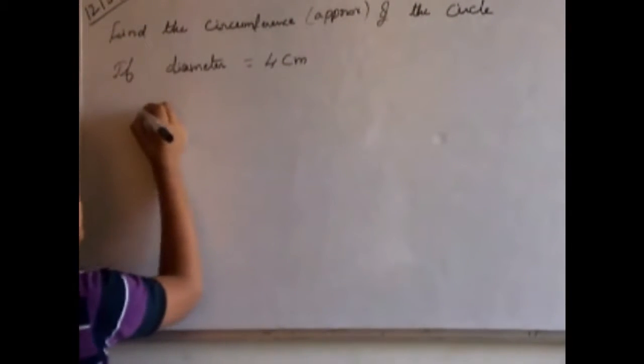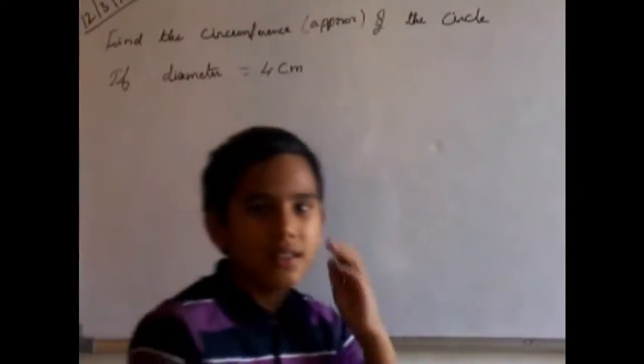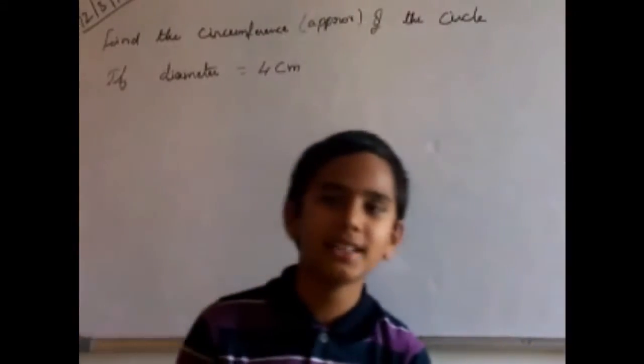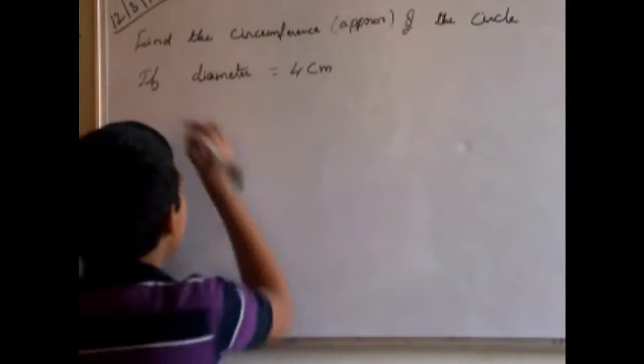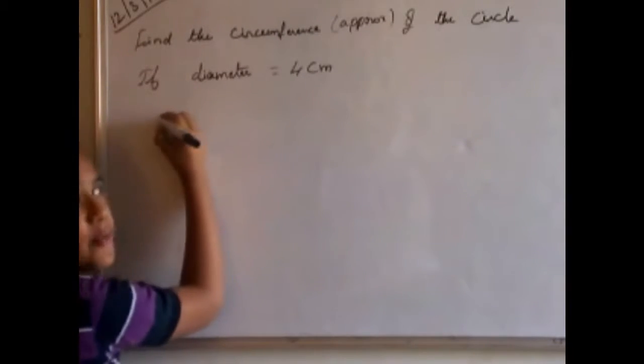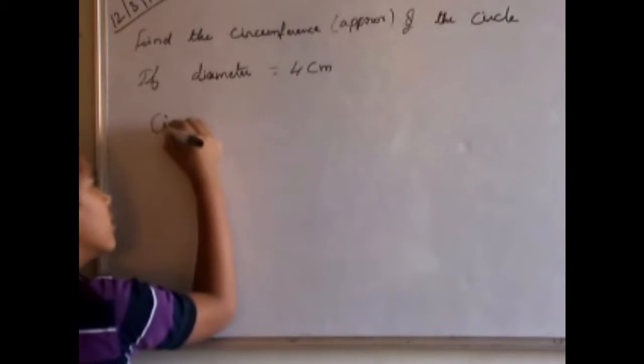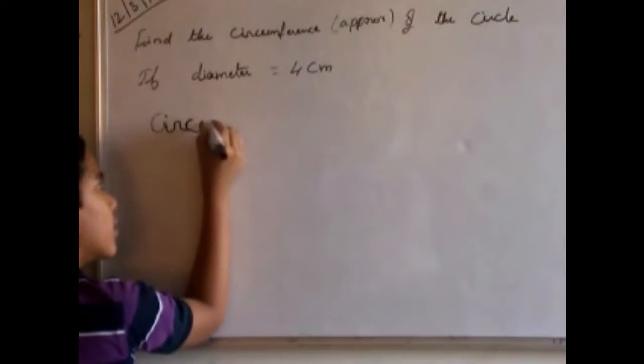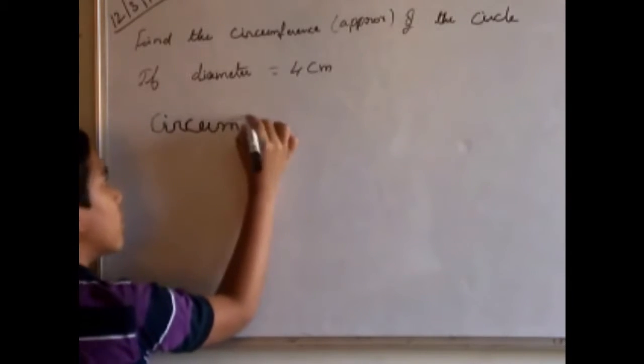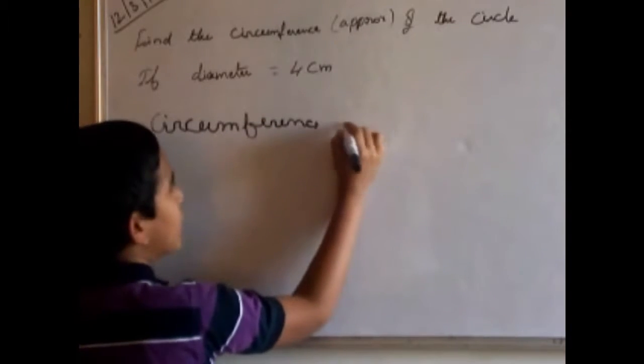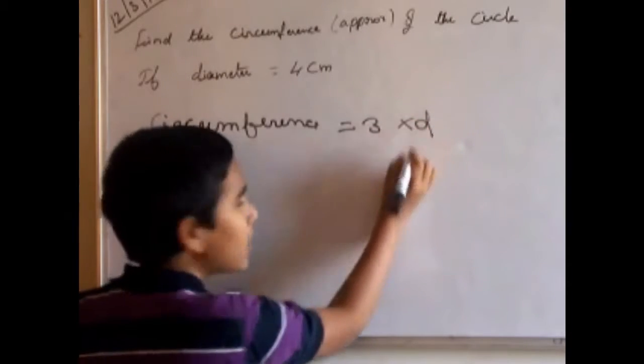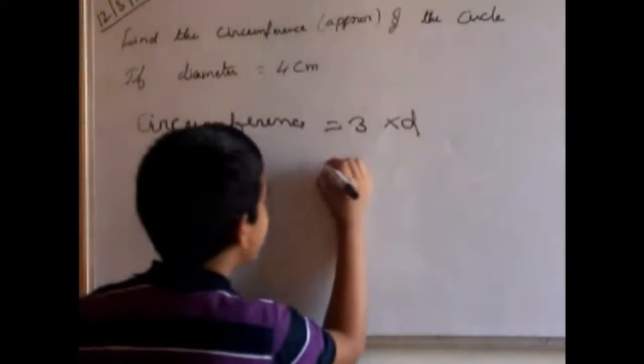Circumference formula is 3 into D for diameter. So we should write first circumference is equal to 3 into D. D is the diameter.